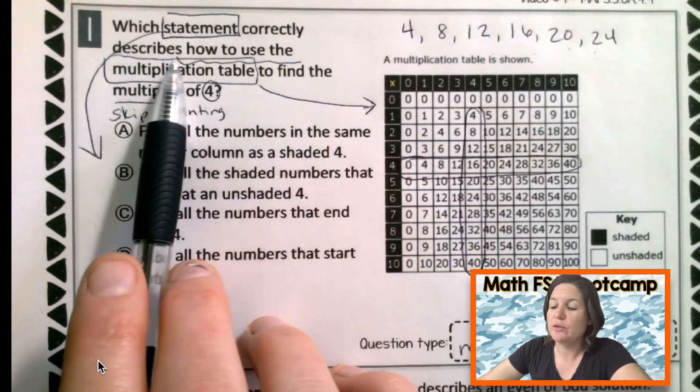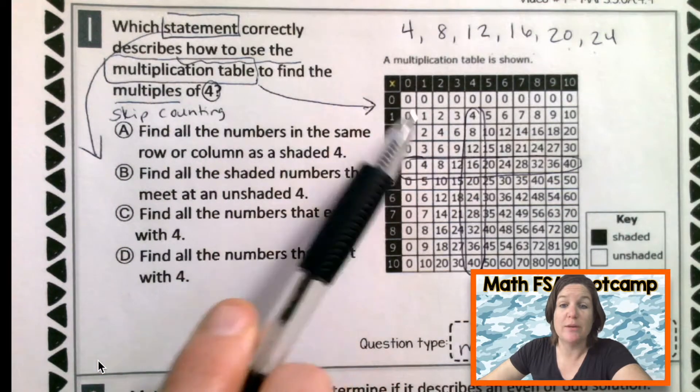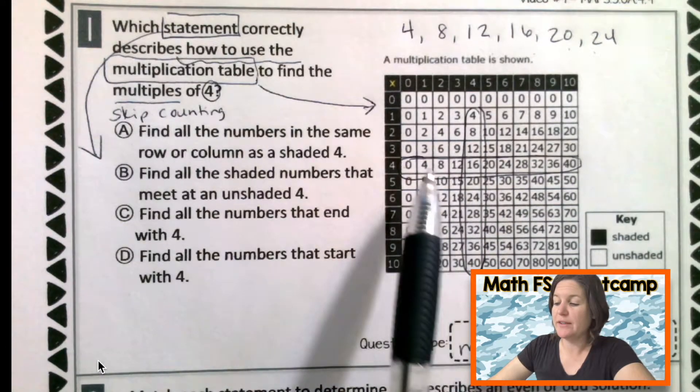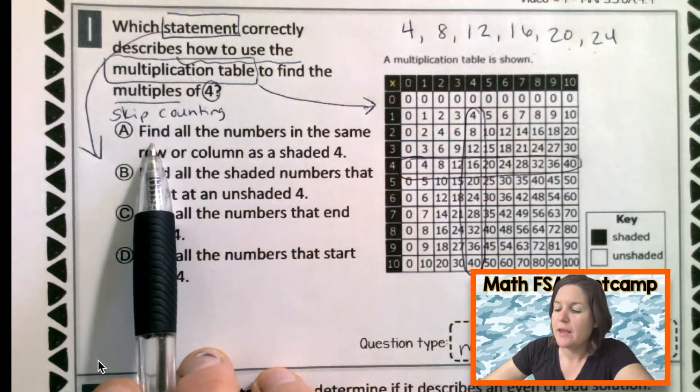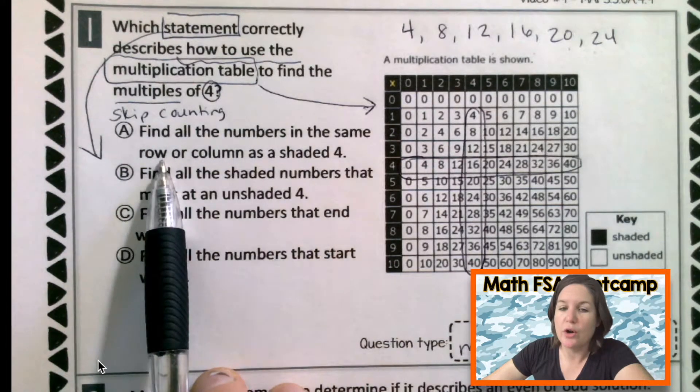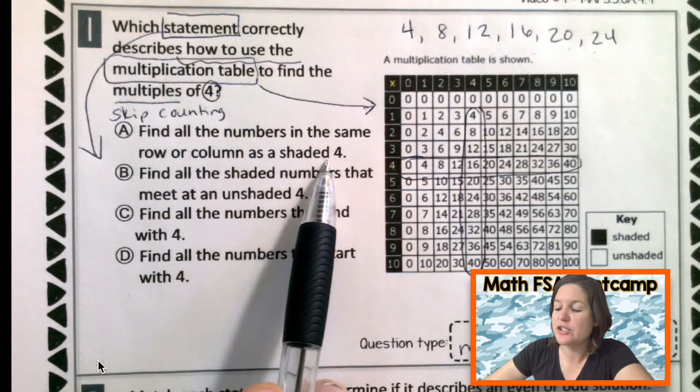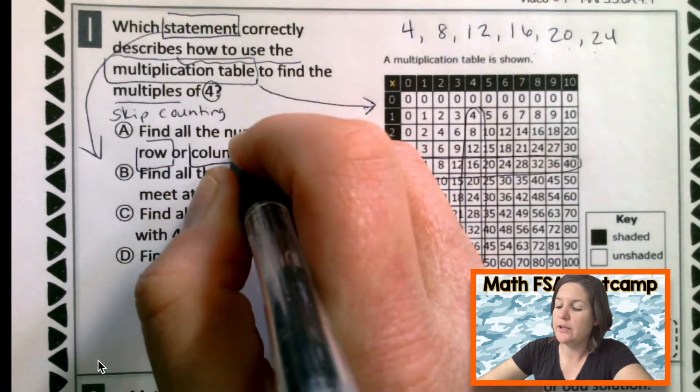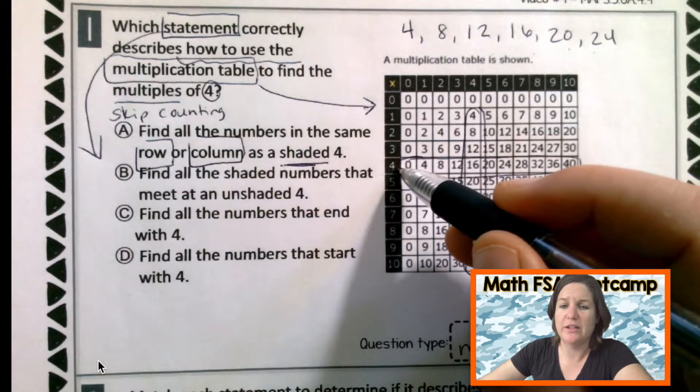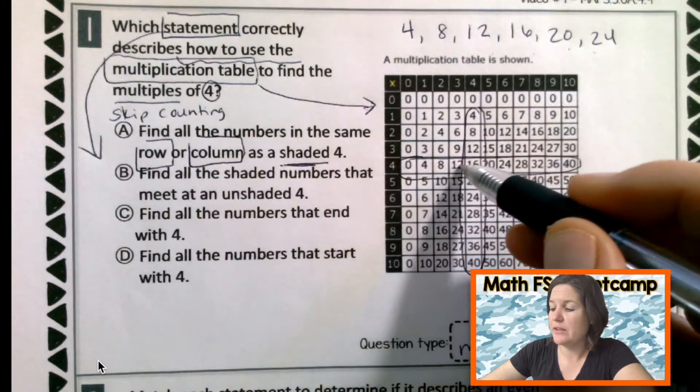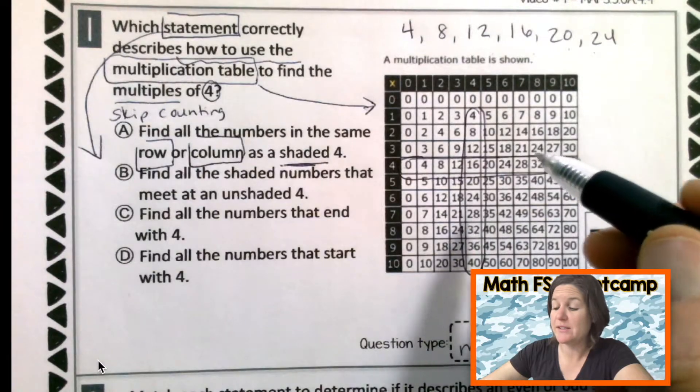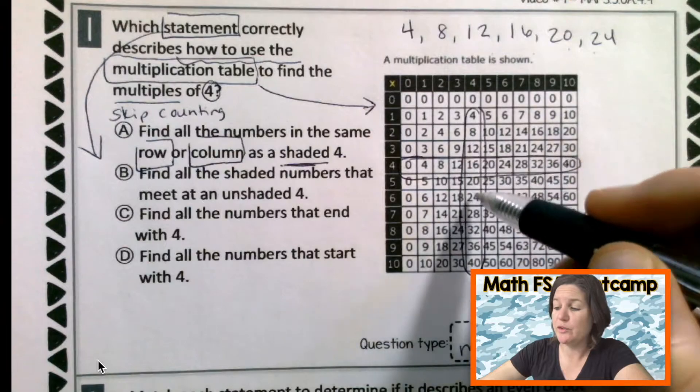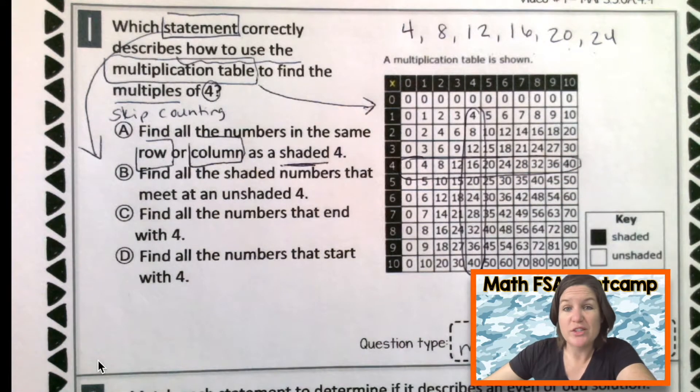So this column and this row represent where the multiples of 4 can be found. So which statement correctly describes how to use the multiplication table to find them? We just said the rows or the columns that have the 4. Let's read A. Find all the numbers in the same row or column as the shaded 4. The shaded 4, the same row or column as the shaded 4. Well, here's a 4 that looks shaded. This is the row and those are the multiples of 4. So that makes sense. And here's the column with a shaded 4. And there's where all the multiples of 4 are. So that makes sense. So should I just go ahead and mark A?